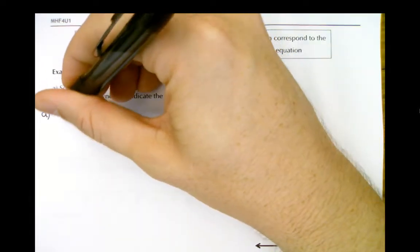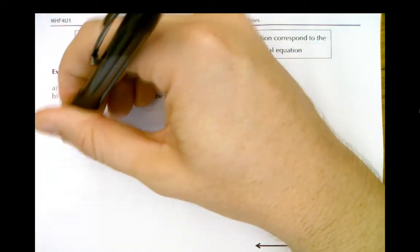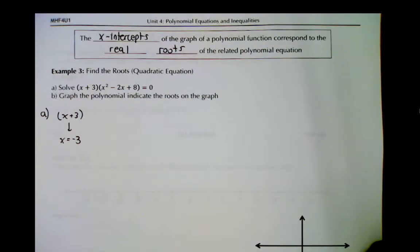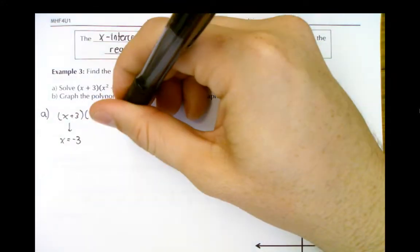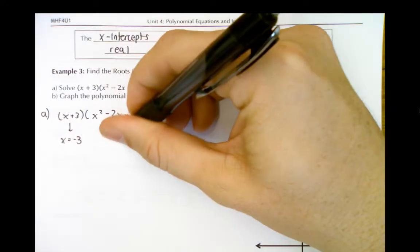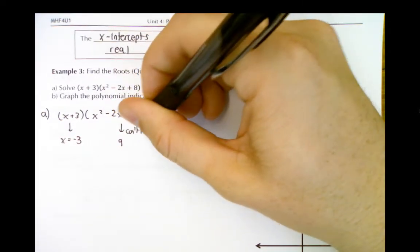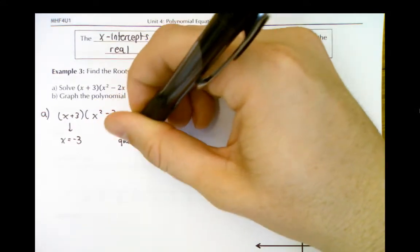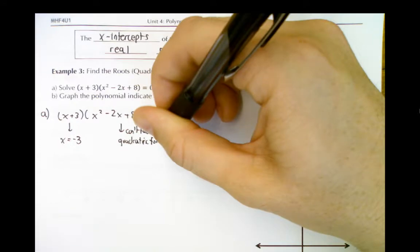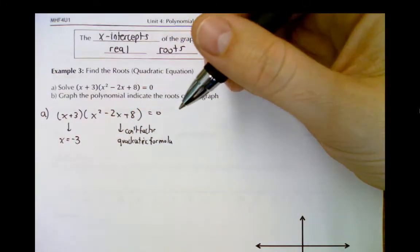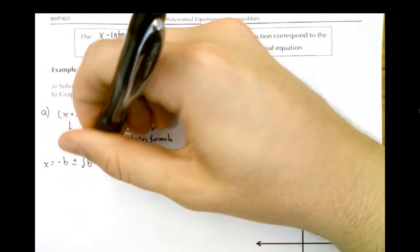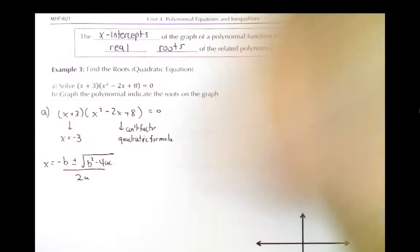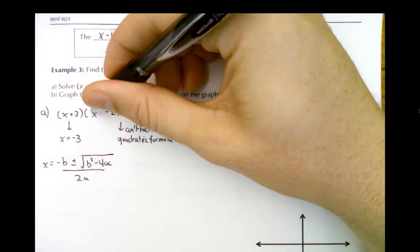So what do we have to do? We have to use the quadratic formula. We know one of our roots is negative 3 from the first factor, but for the quadratic term we need the quadratic formula: x equals negative b plus or minus the square root of b squared minus 4ac, all over 2a. In this case a is 1, b is negative 2, and c is 8.